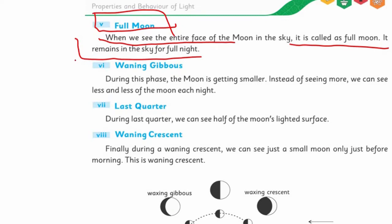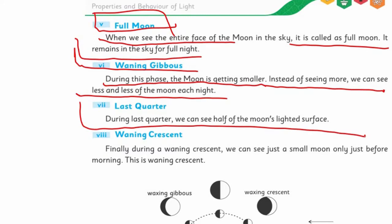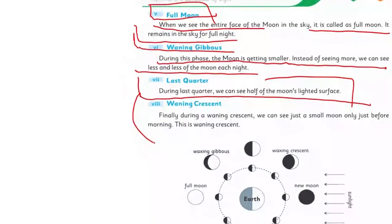But after some time again, waning gibbous comes. It starts to set. During this phase, moon is getting smaller. Instead of seeing more, we can see less and less of the moon each night. It keeps getting smaller and smaller. And in last quarter also, it's very less visible. During the last quarter, we can see half of the moon's lightened surface. It becomes half in last quarter.